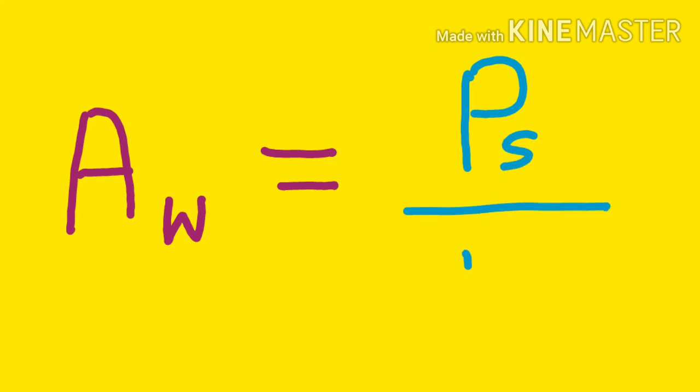Now coming back to water activity, it can be defined as the ratio of vapor pressure of water in solution denoted by Ps to the vapor pressure of pure water which is denoted by Pw.